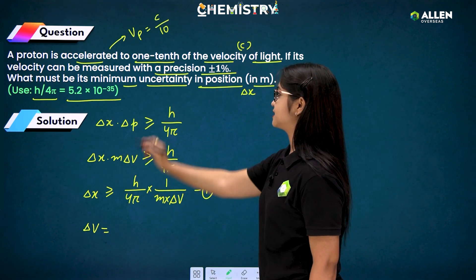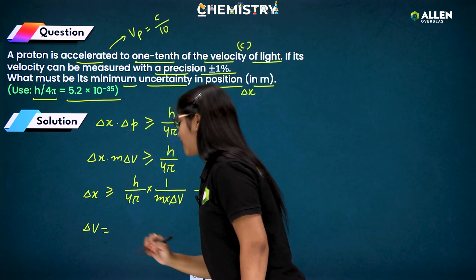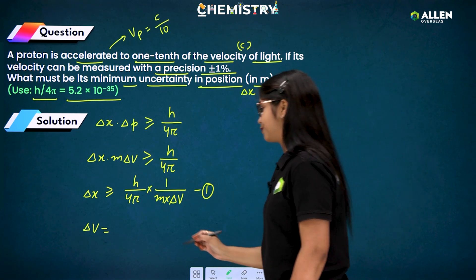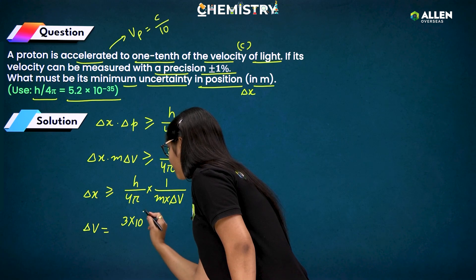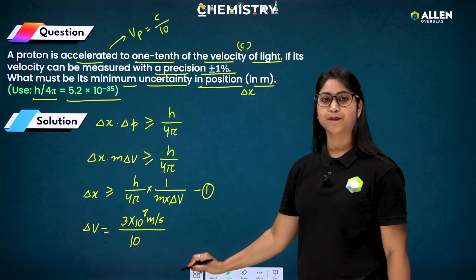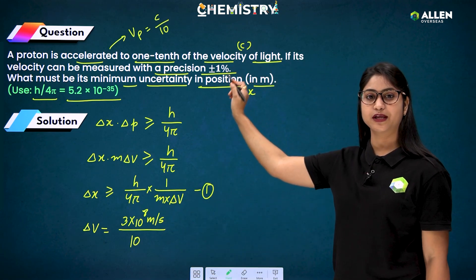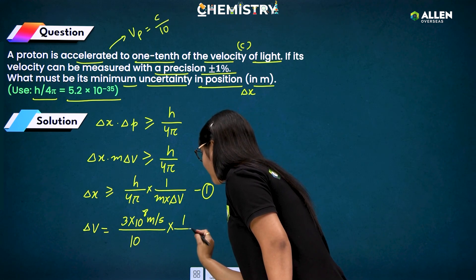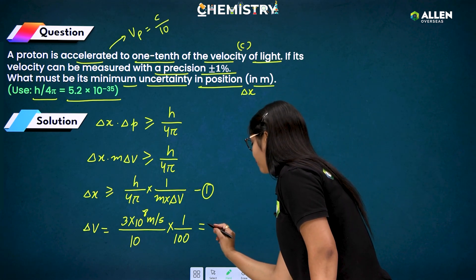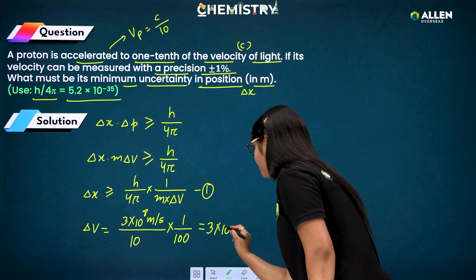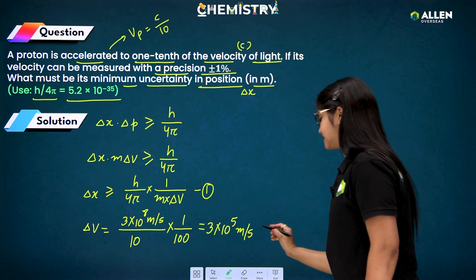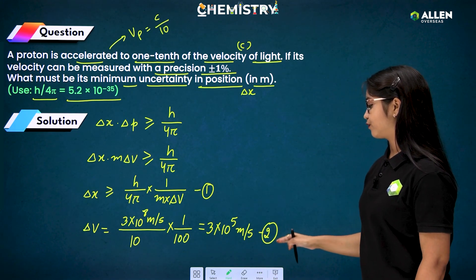To find Δv: the velocity of the proton is c/10. The velocity of light c = 3 × 10⁸ m/s, so the proton's velocity is 3 × 10⁷ m/s. Taking one percent of that gives Δv = 3 × 10⁷ × (1/100) = 3 × 10⁵ m/s. This is equation 2.